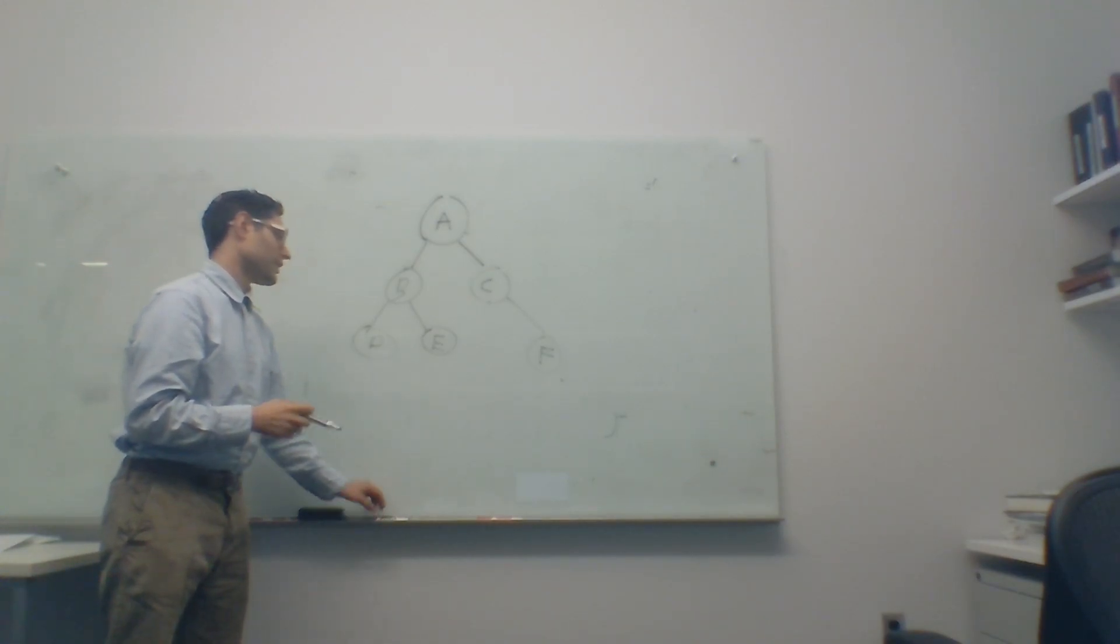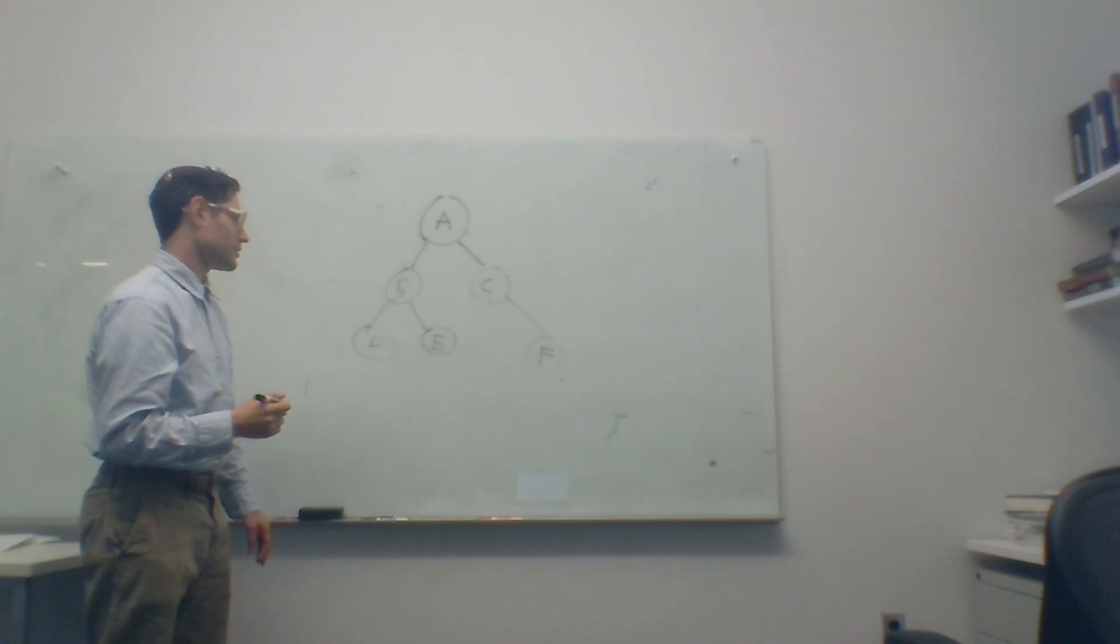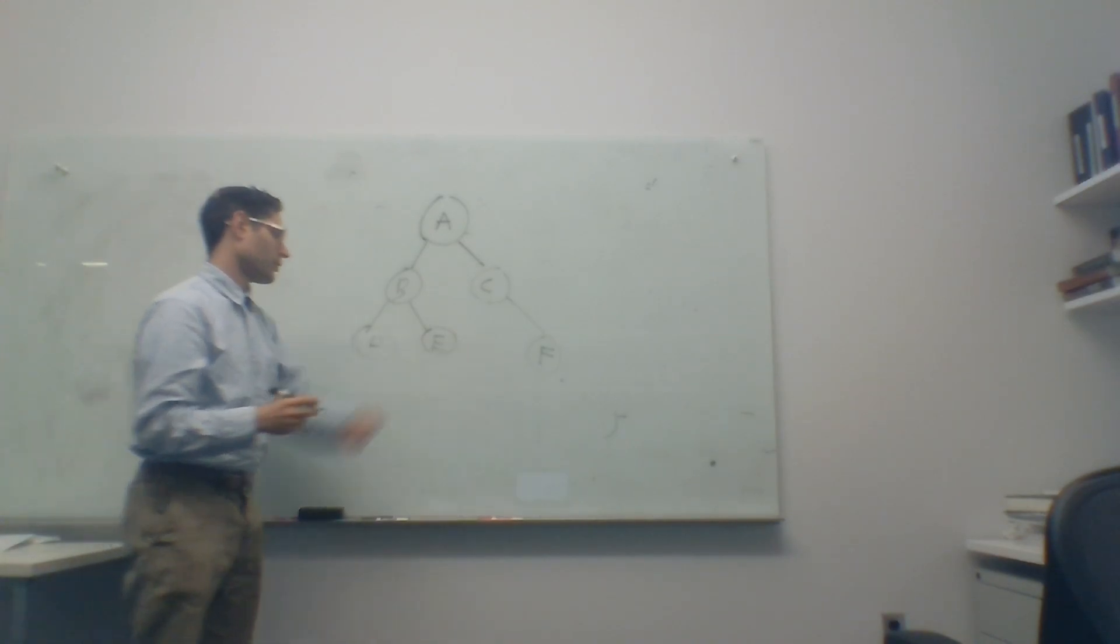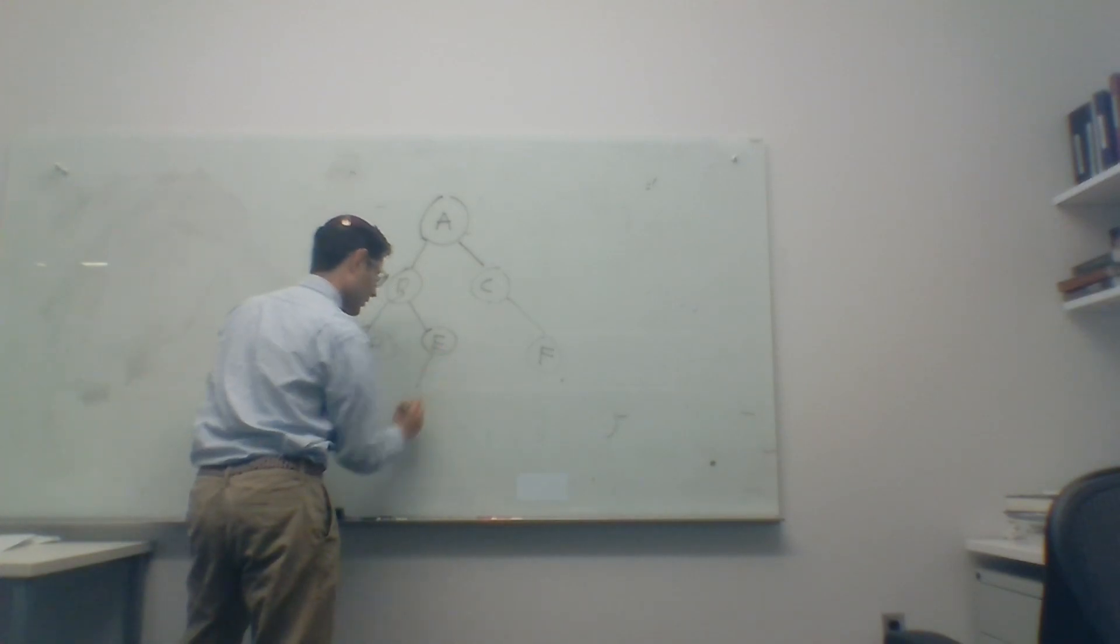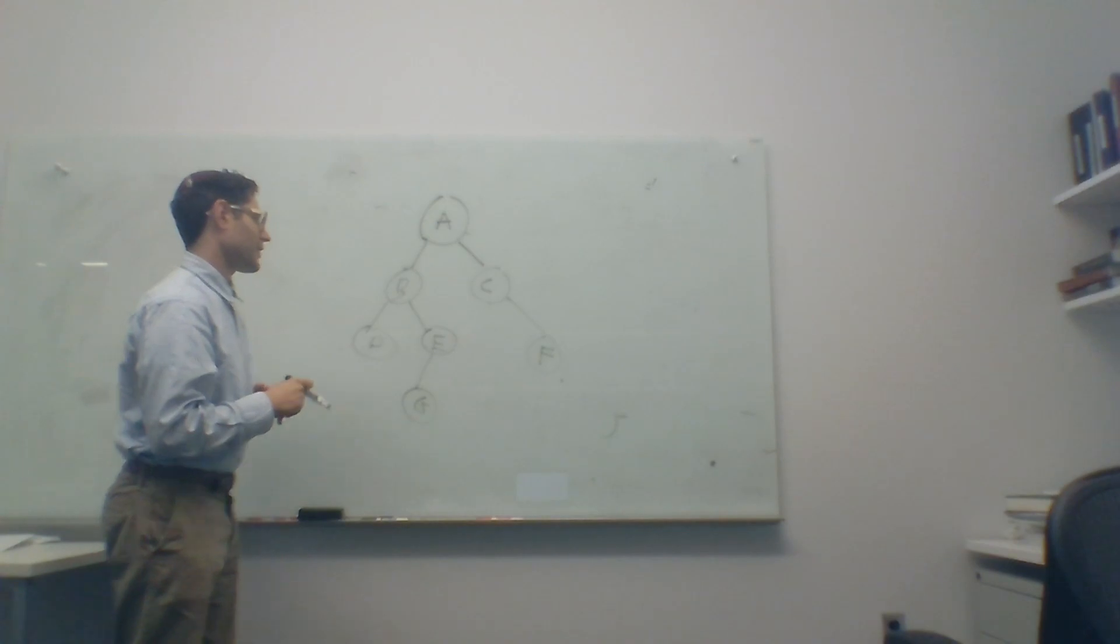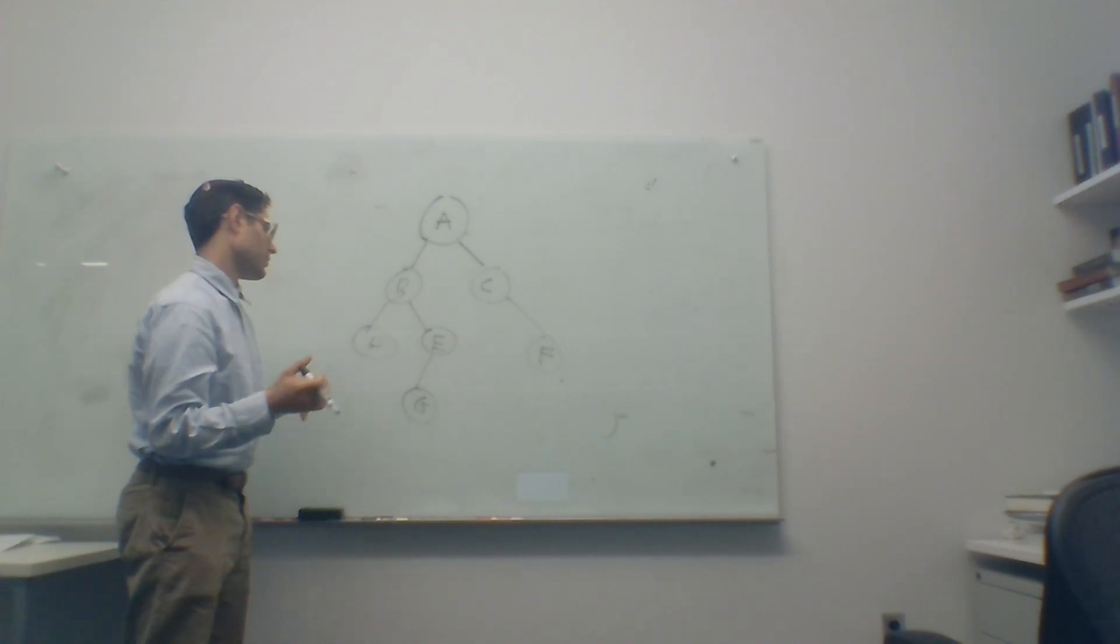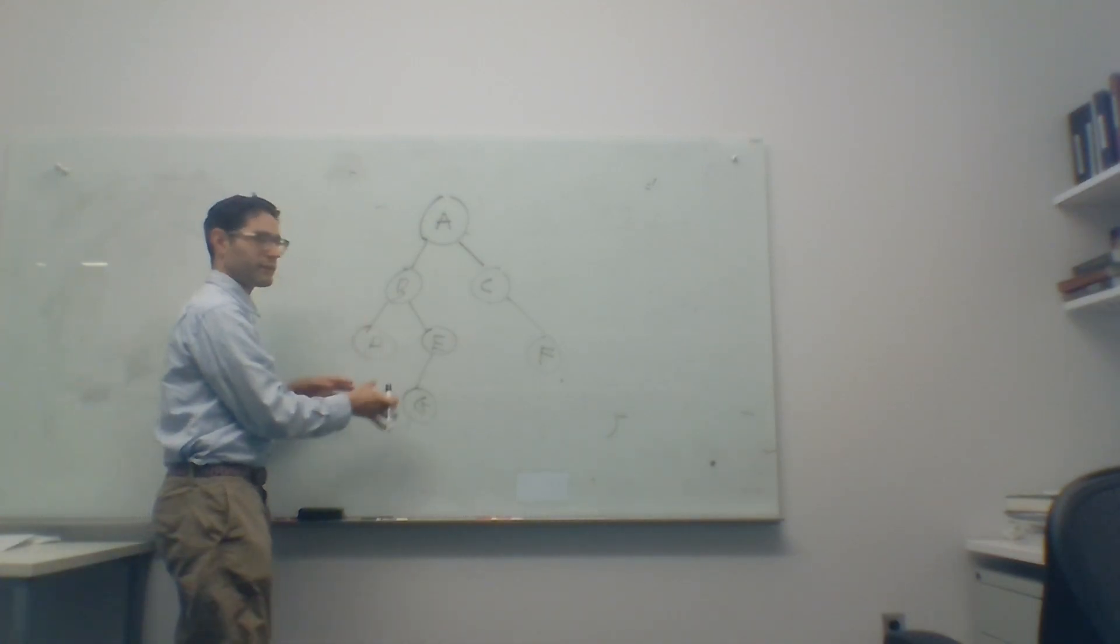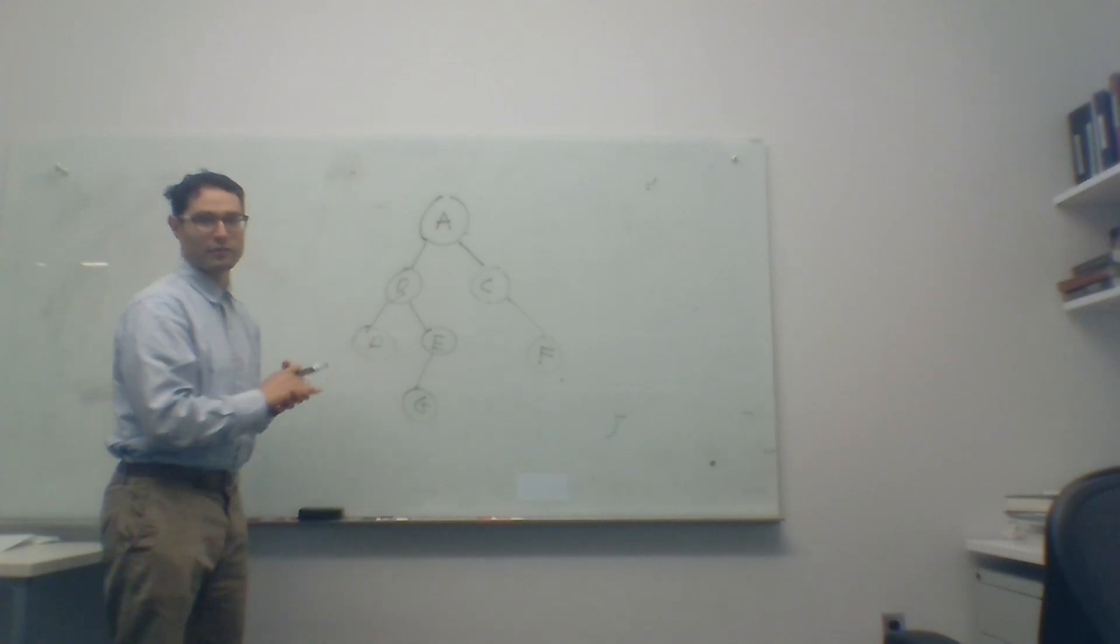Now these nodes, any node that has no child is a leaf. So D, E, and F are all leaves here, and if we add G over here, E is no longer a leaf, D, G, and F are the leaves. Any node that is not a leaf is what we call an internal node, and we can call leaves alternatively external nodes.